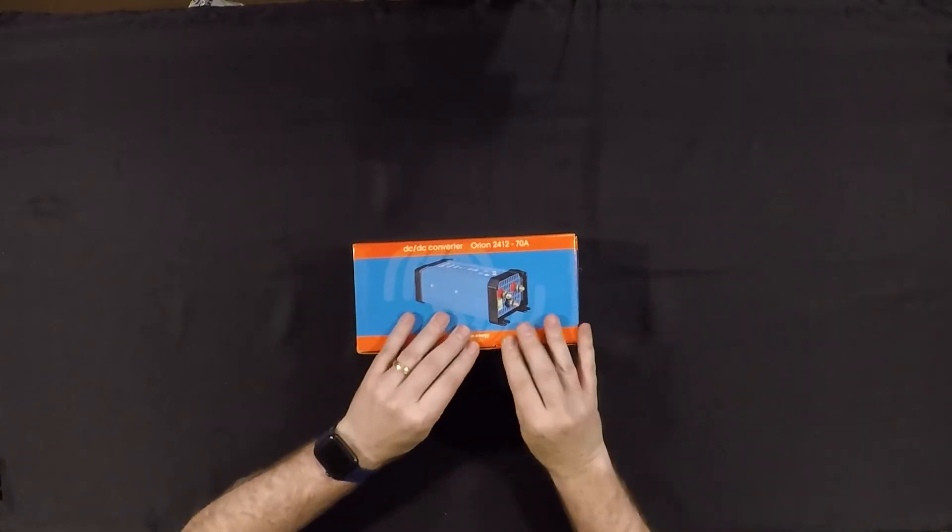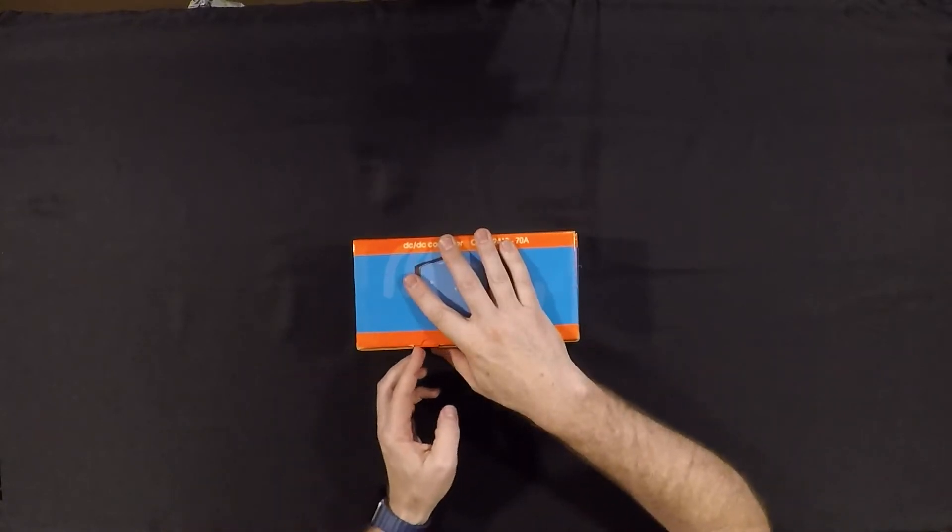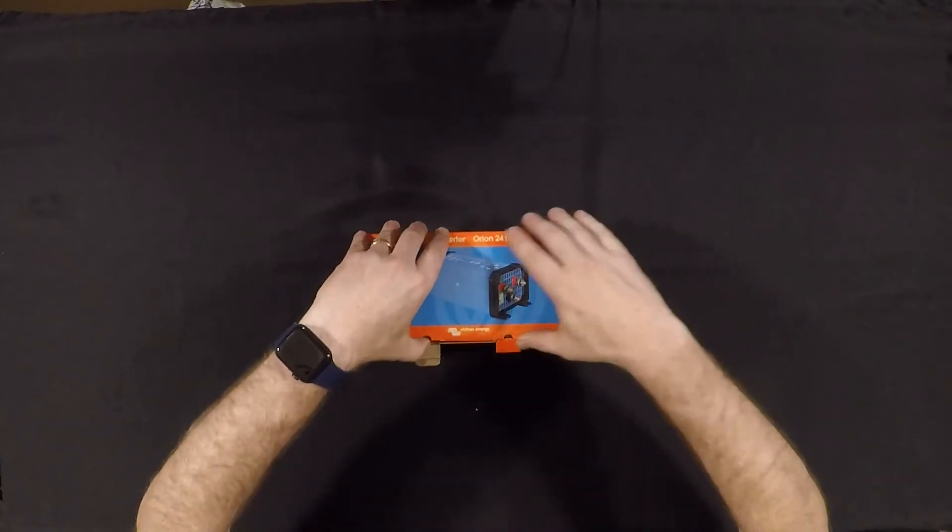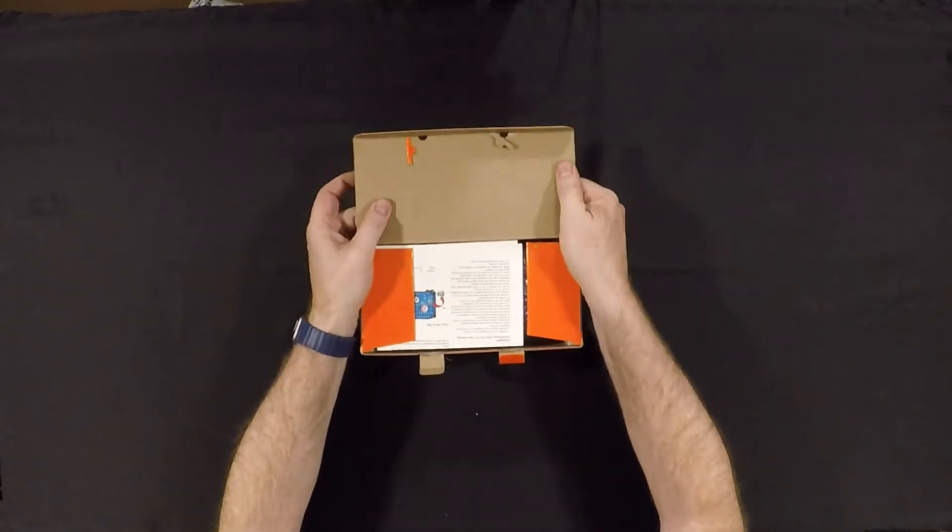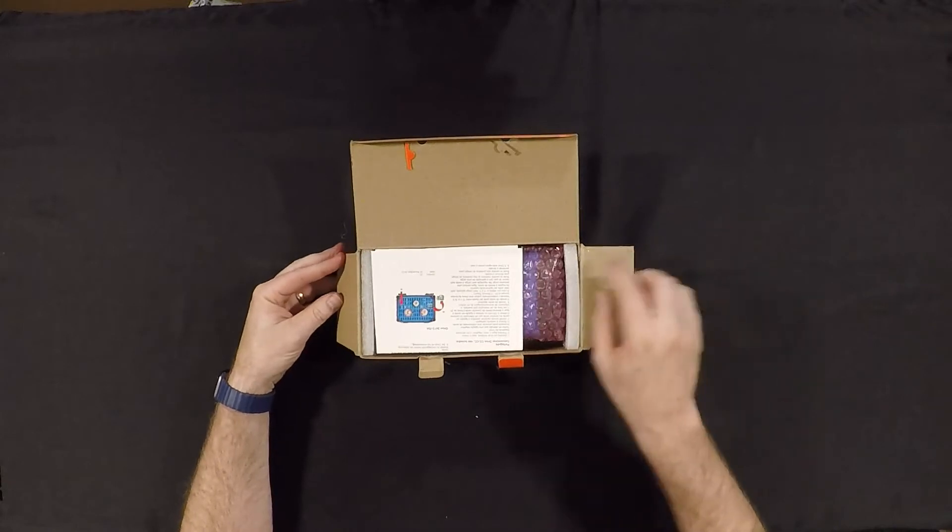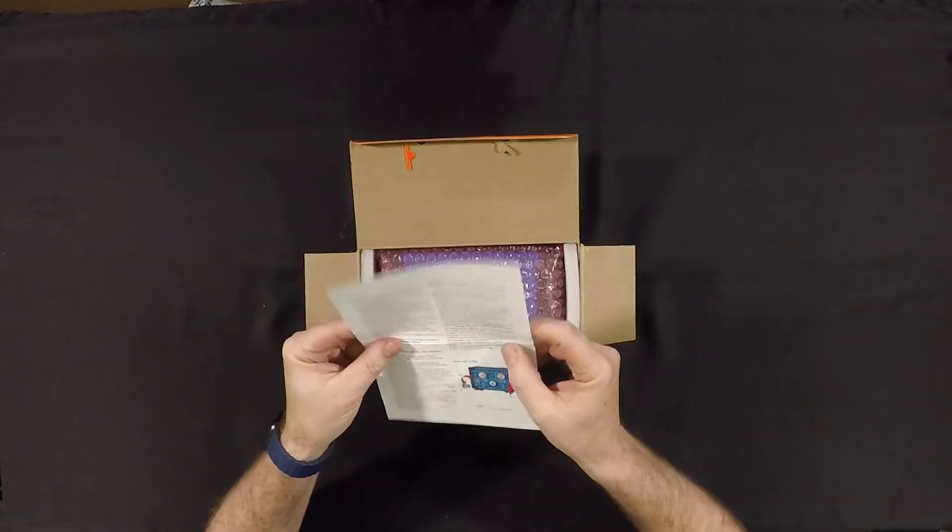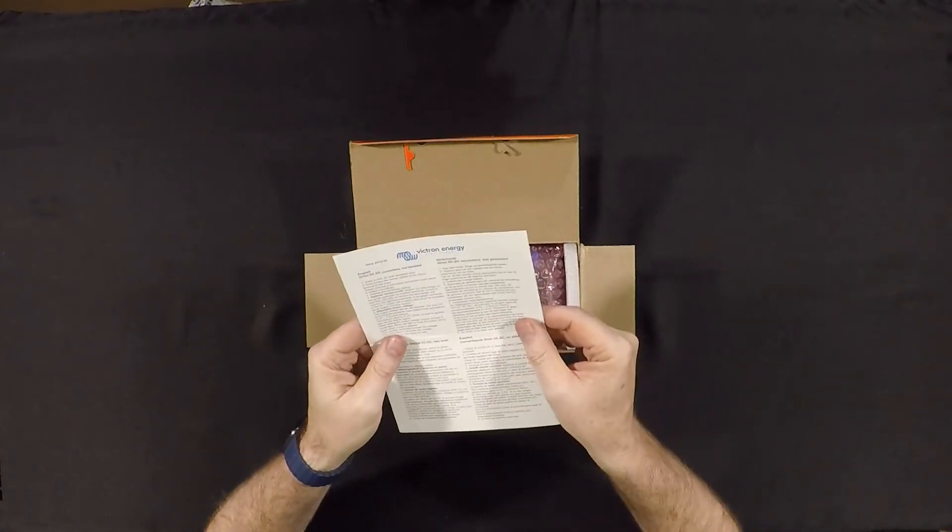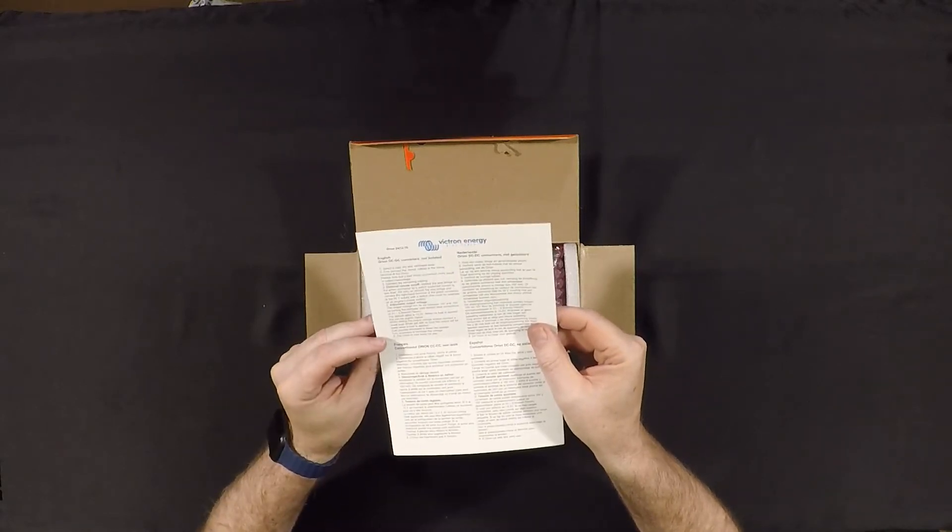So let's go ahead and unbox this and take a look at it. Let me get in here and get these little tabs out. You can see I haven't even cracked open this box yet to make sure everything's in there. All right, box open. In typical Victron fashion, you've got your instructions here right on the top, really small card this time, multiple languages here on the card.